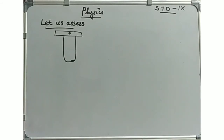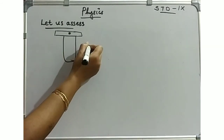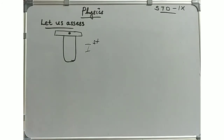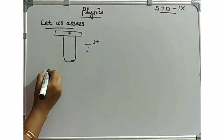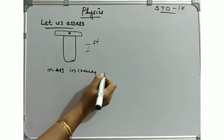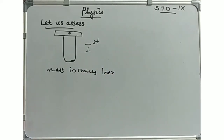This is related to Newton's first law of motion. One object's inertia is related to its mass. If the mass of an object increases, the inertia also increases. Mass increases, inertia increases.